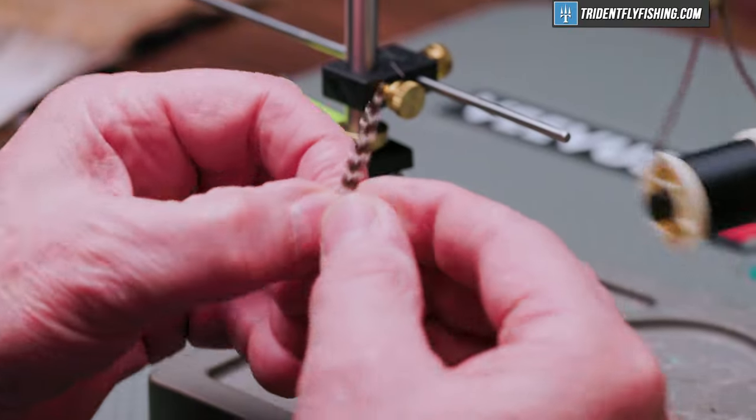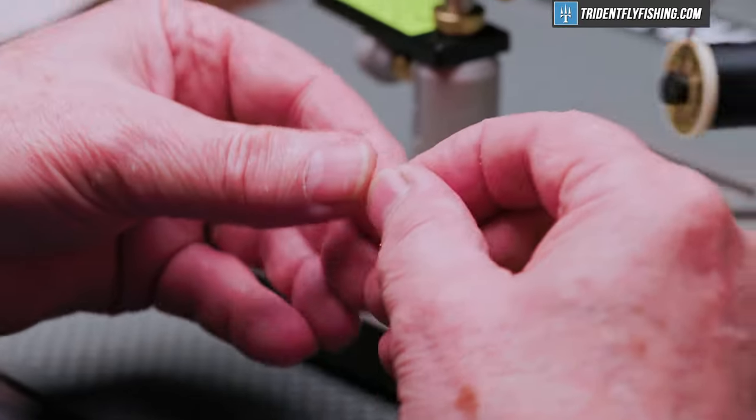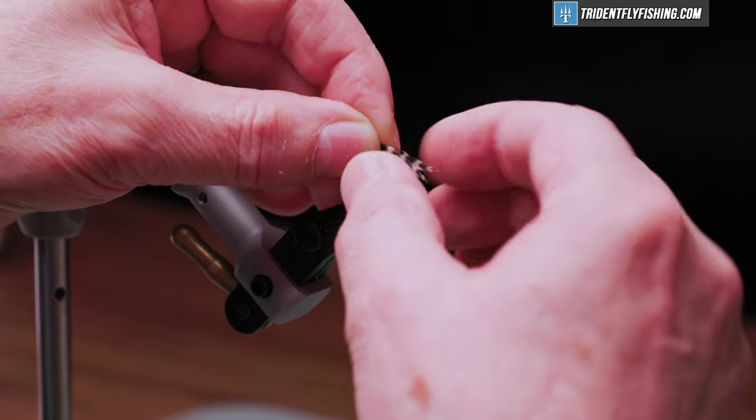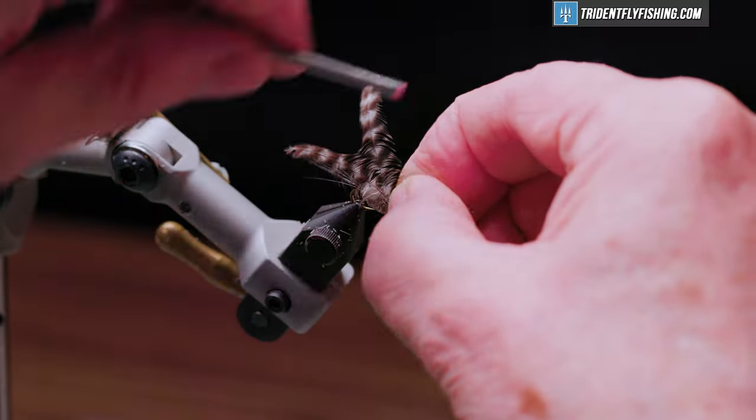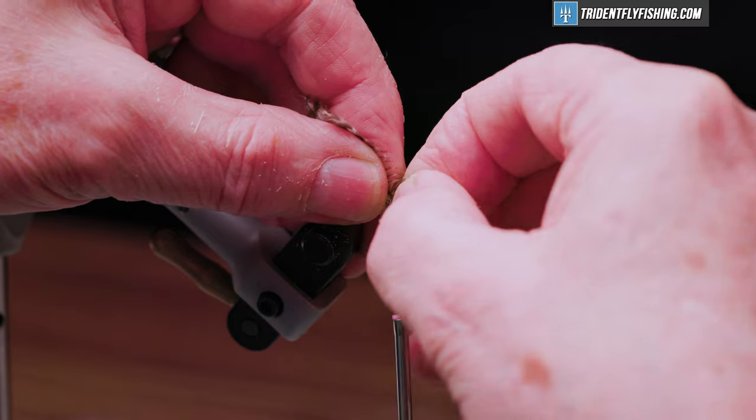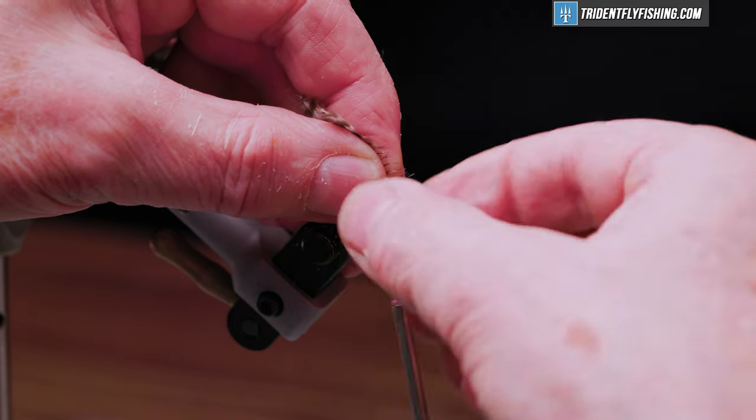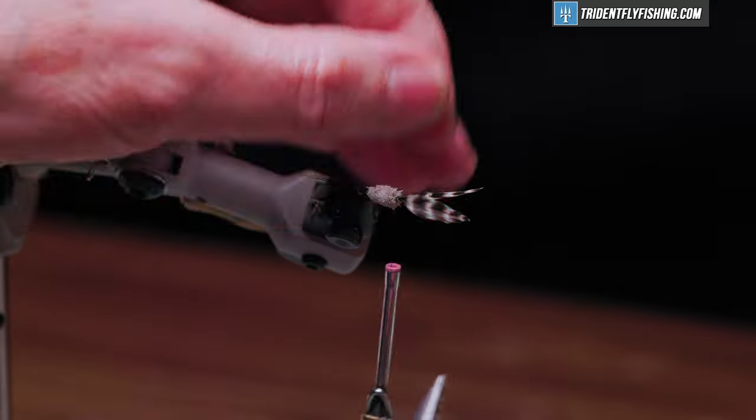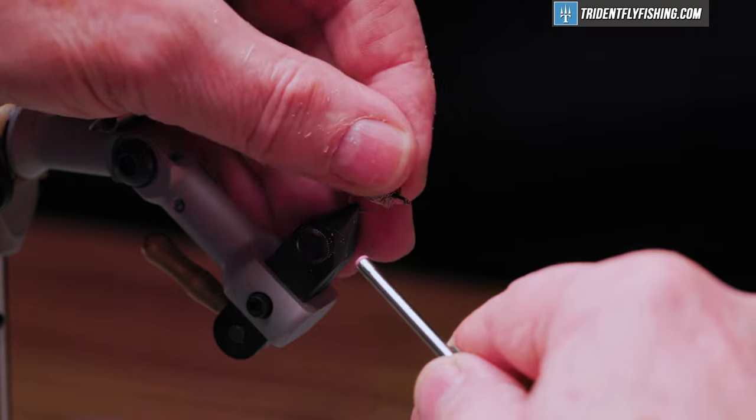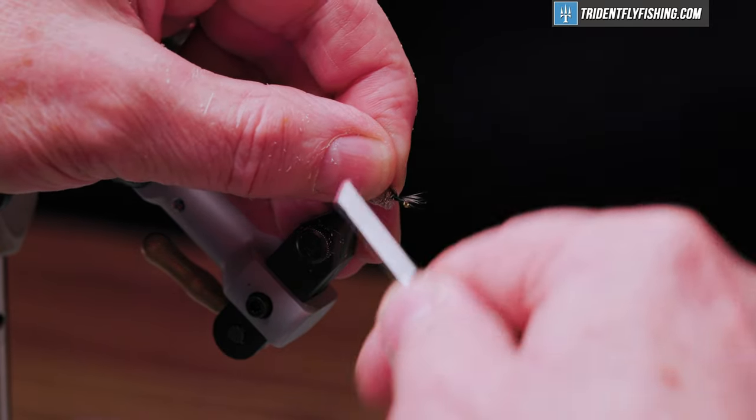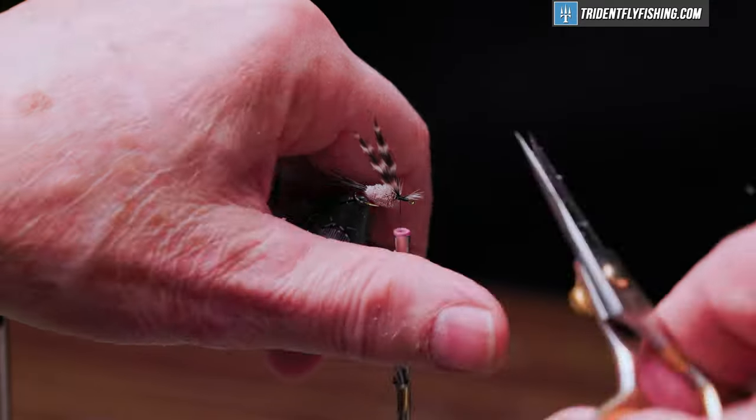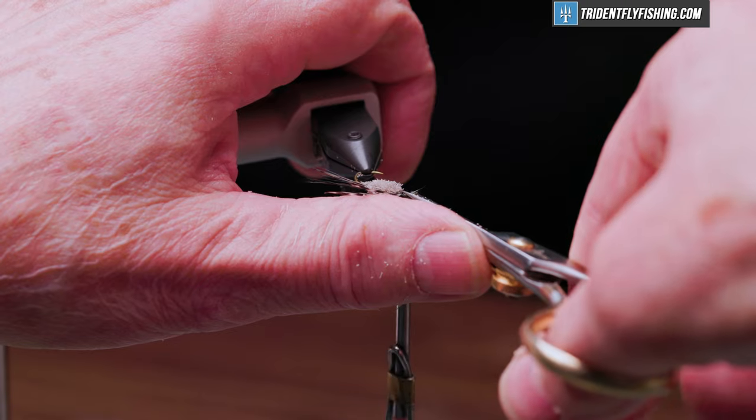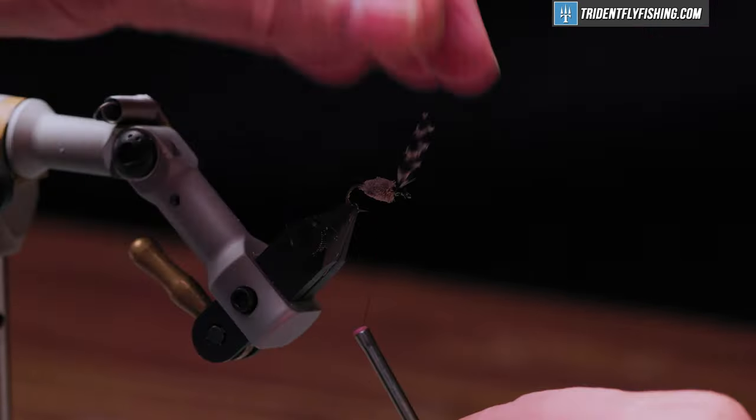We're just going to use the tips and we want to tie those in so the shiny sides of the feathers are facing each other, and we want these to be a hook shank in length. Now because of that big body in my way, I tie these in a little bit backwards, like that. Get them where I want them, and we can tie them in. Jump our thread in the front of the feathers, form a thread dam to stand the wings up. There we are.